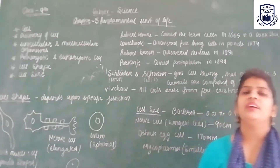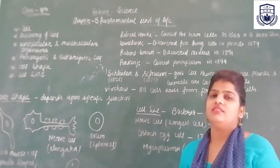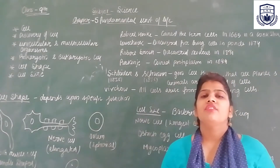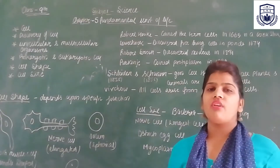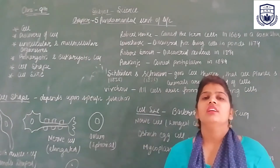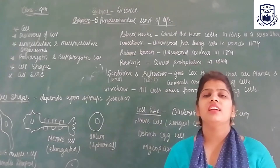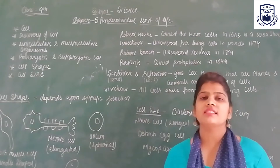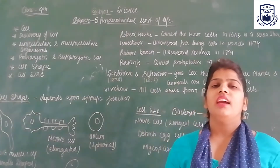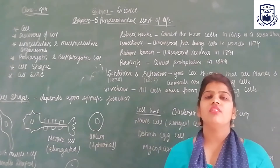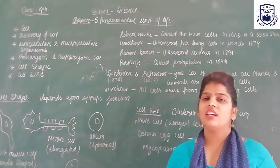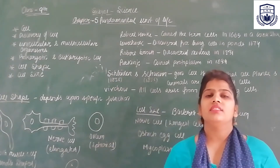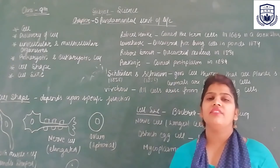Let's start from the definition of cell. Cell is the basic unit of life which defines the structure and function of an organism. The cell is the basic unit of all living organisms — plants, animals, microorganisms, and human beings. It is the fundamental unit of life.